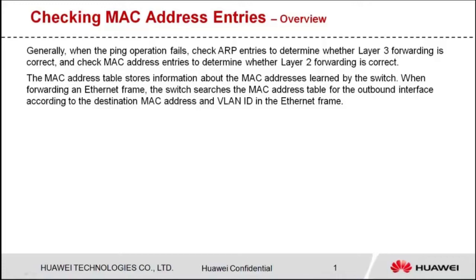First, let's see how to query MAC address entries. The MAC address table stores information about the MAC addresses learned by the switch. When forwarding an Ethernet frame, the switch searches the MAC address table for the outbound interface according to the destination MAC address and VLAN ID in the Ethernet frame.